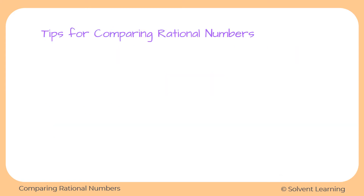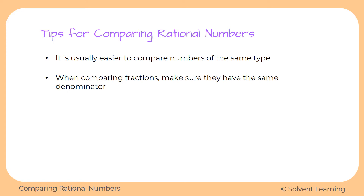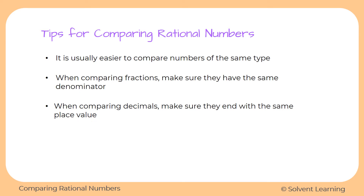Here are some tips for comparing rational numbers. It's usually easier to compare numbers of the same type — for example, two decimals or two fractions. So one strategy we'll use is making sure both numbers are the same type. When comparing two fractions, we want them to have the same denominator. And when comparing decimals, we want them to end with the same place value, so both go out to, say, the hundredths place.